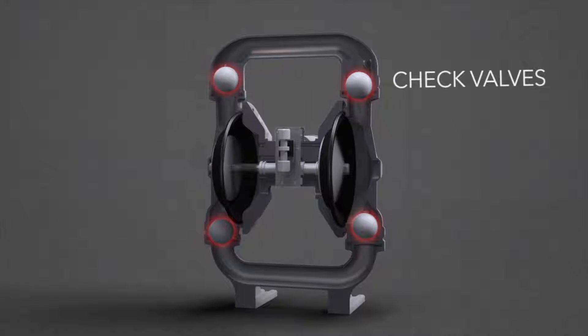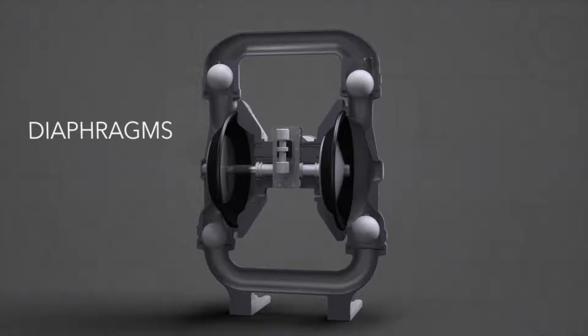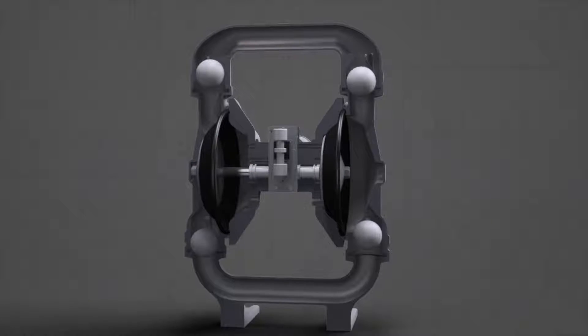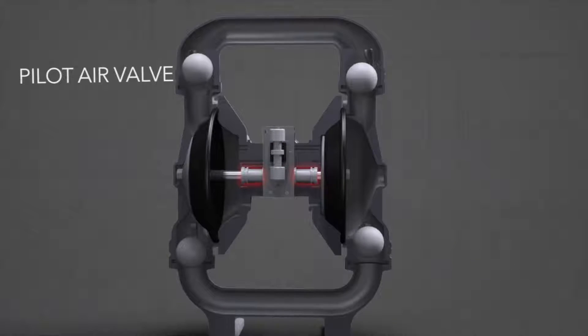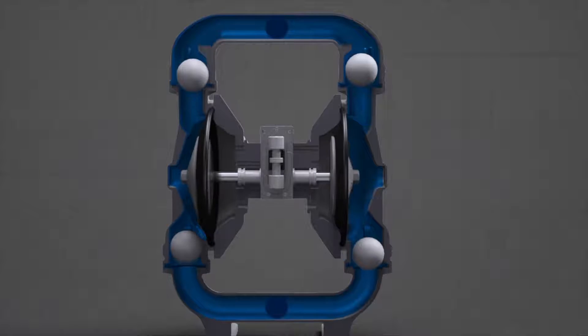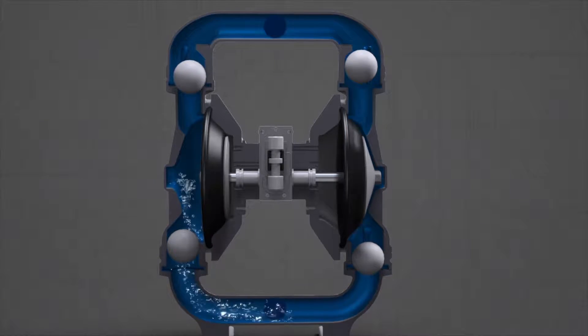Check valves, diaphragms, the diaphragm rod assembly, the main air valve, and the pilot air valve. Now that you know the key components of the A200, we can discuss how it works.